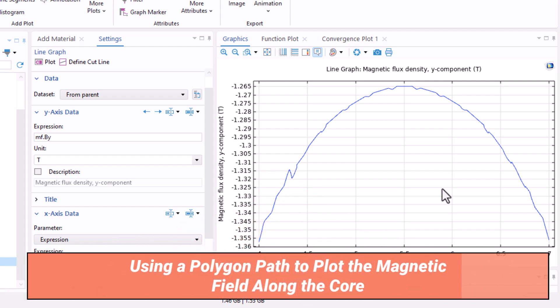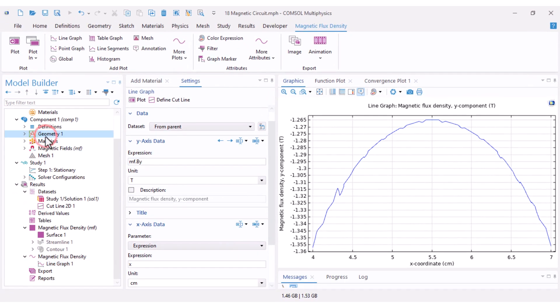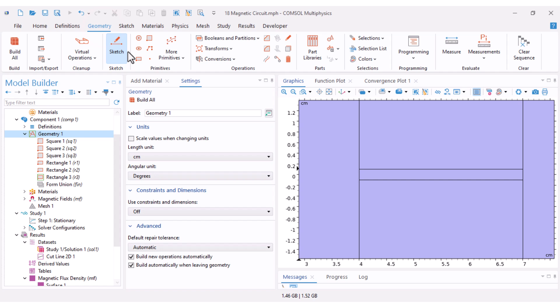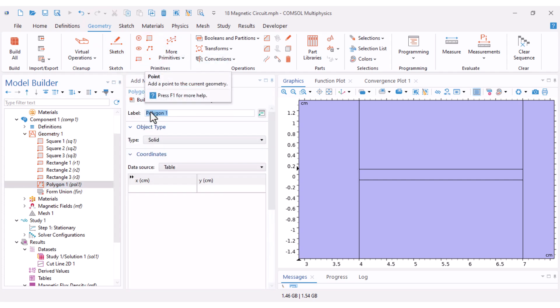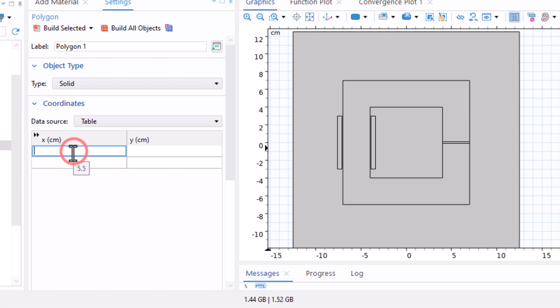Now I'll add another line to measure H across the entire magnetic path. I get back to geometry and under geometry I add a polygon. I want to draw a polygon just along my magnetic path to see the magnetic field intensity over it.